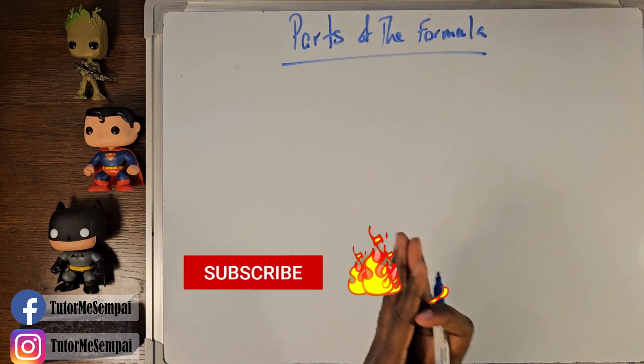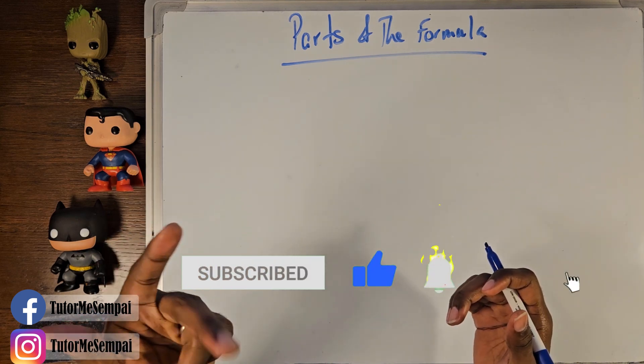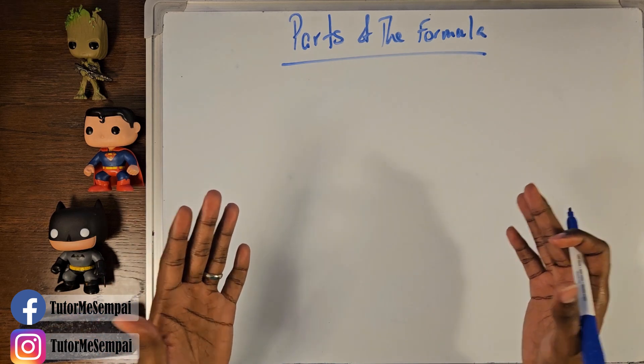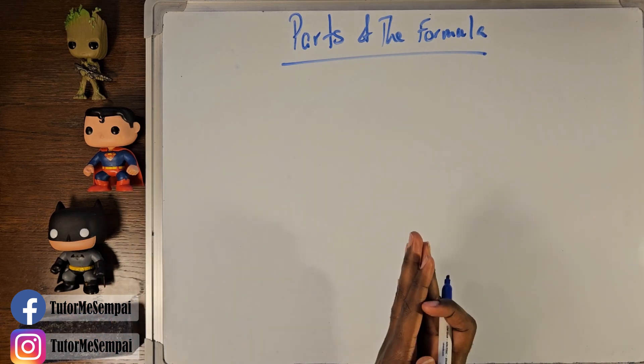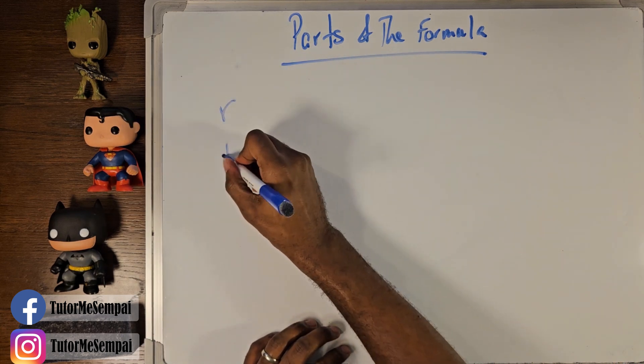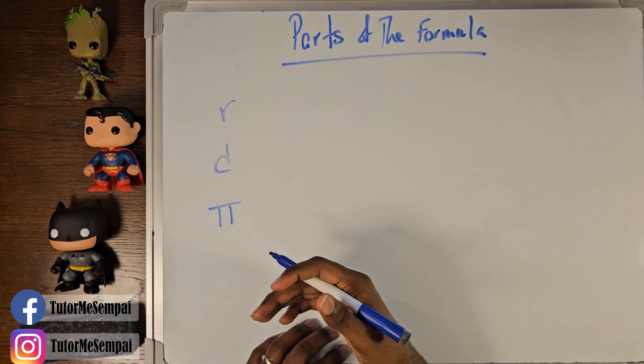Unlike our straight edge shapes, we're not going to be using side, length, width, height, base to find our area for our circle. Instead, we're going to have R, D, and pi.